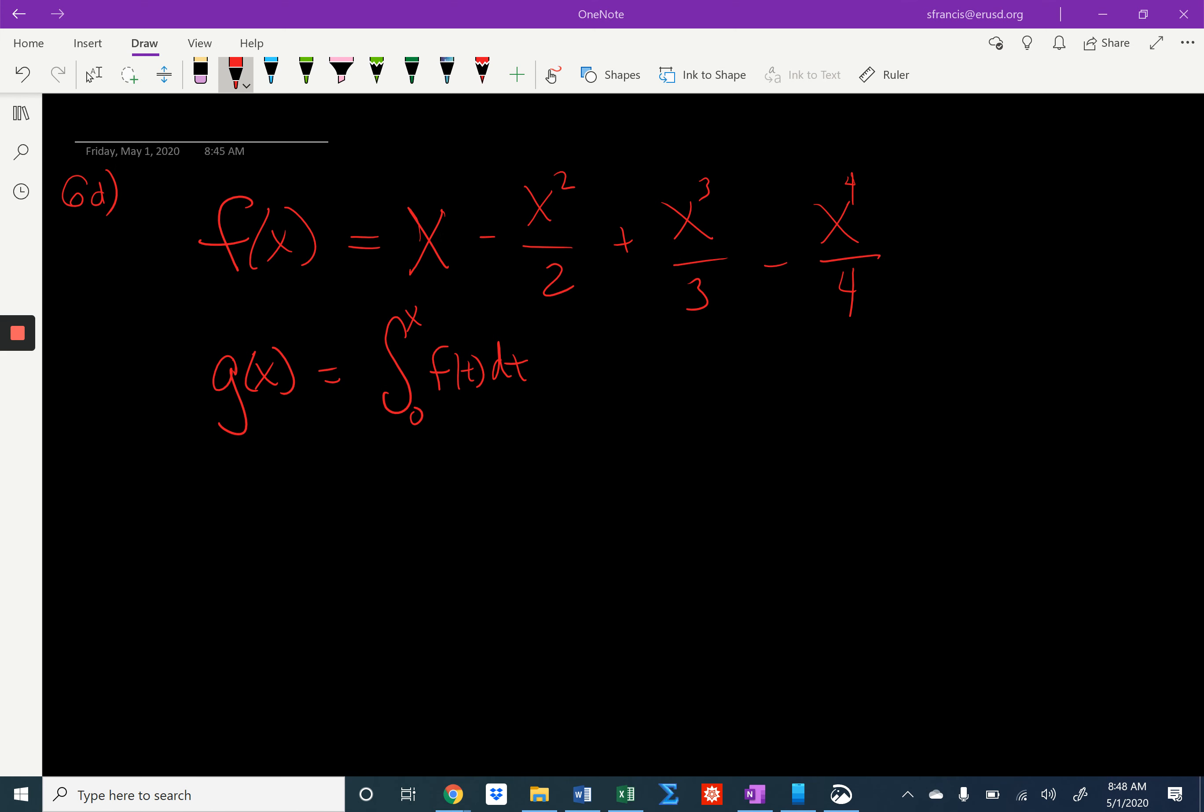All right, so this is an explanation for 6D of the released free response questions for the 2017 AP Calculus BC exam. This problem gave us that f of x was equal to this, at least the fourth degree polynomial here for this problem.